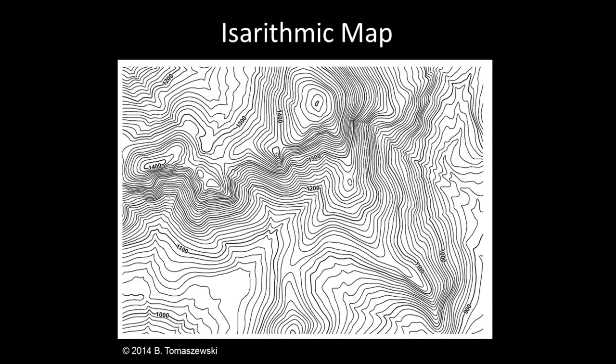Another type of thematic map is an isorhythmic map. Isorhythmic maps use line symbols to display phenomena that are continuous in nature. For example, elevation is continuous — there is never a spot on the earth's surface that does not have an elevation. Thus, contour maps as shown in this figure have been developed to display surface elevation. In a contour map, elevations of the same value are connected using a line symbol. Each line represents a 10-meter change in elevation, and changes every 100 meters are indicated by elevation labels. The closer the lines are to one another, the greater the elevation increase. A similar approach can be used for other continuous surfaces such as temperature or precipitation.